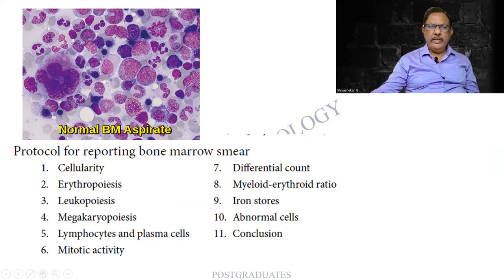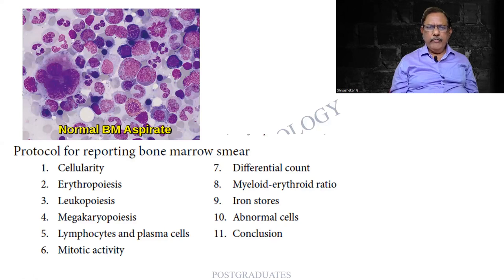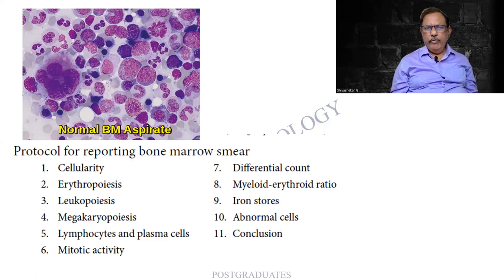How do you describe a bone marrow? The full contents are too much for the exam, but follow this pattern: cellularity, erythropoiesis, leukopoiesis, megakaryopoiesis, lymphocytes, plasma cells, mitosis, differential count, myeloid-erythroid ratio, iron stores, any abnormal cell, and finally a conclusion. This particular pattern, for any question on bone marrow, we will follow.